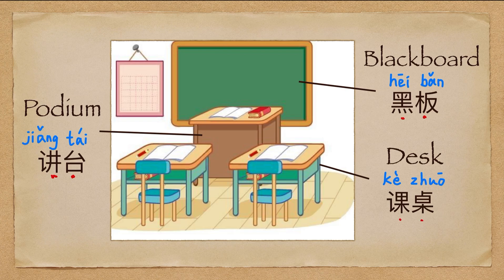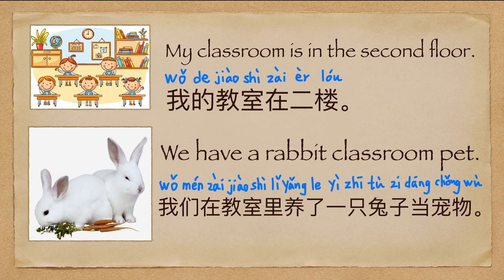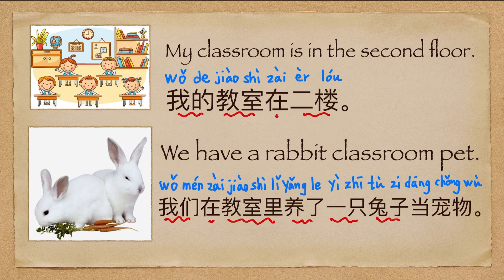教室 (classroom). 我的教室在二楼 (My classroom is on the second floor). 我们在教室里养了一只兔子当宠物 (We keep a rabbit as a pet in our classroom).